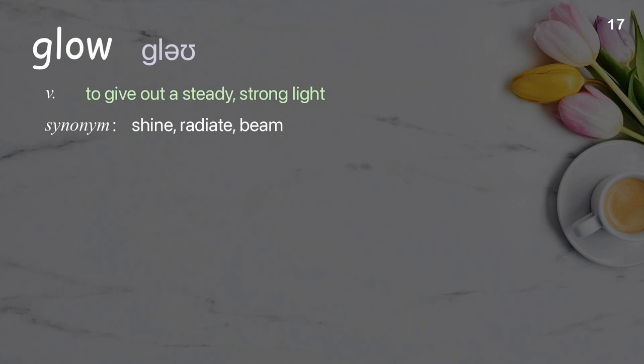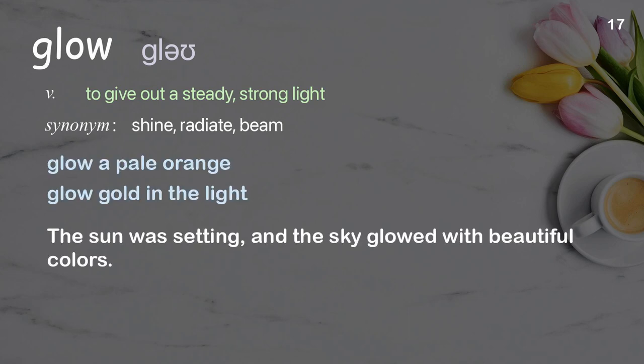Glow: to give out a steady strong light. Examples: glow a pale orange, glow golden the light. The sun was setting and the sky glowed with beautiful colors.